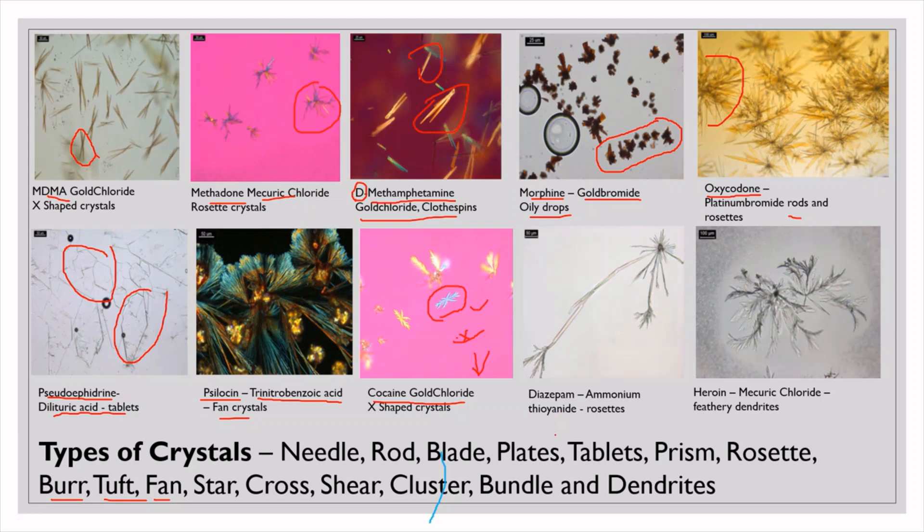Then diazepam, a chemical of benzodiazepines family. This is using ammonium thiocyanate, so it is just like a glass fracture. That kind of microcrystal is there, but it is called as the rosette type. Rosette type is here. And again heroin - you can see mercury chloride. Mercury chloride is repeated for the second time. We have already used it for methadone; it is forming rosettes. For heroin it is forming feathery dendrites. If you are seeing these two it is little confused, it is almost similar, but you need to identify carefully. It is having feathery kind of crystals are formed.